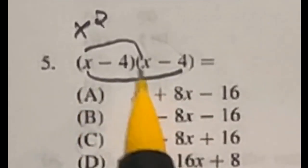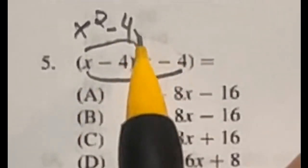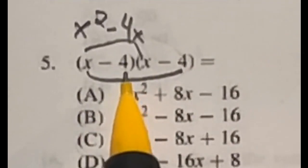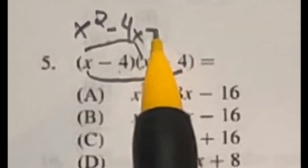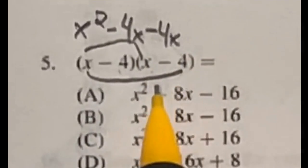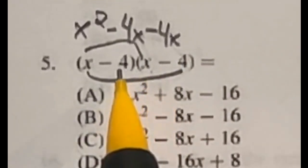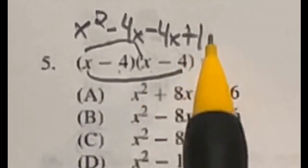Then we have our outside terms, which would be X times the negative 4, giving us negative 4X. And then we have the inside terms, negative 4 times X, which is another negative 4X. And last but not least, we have our last terms, negative 4 times negative 4, which is a positive 16.